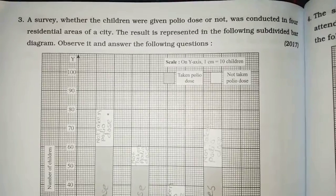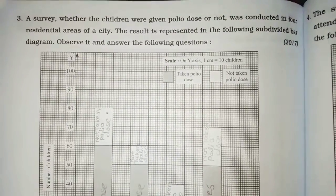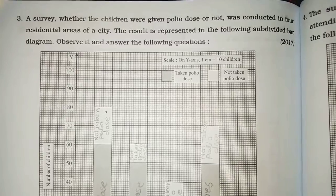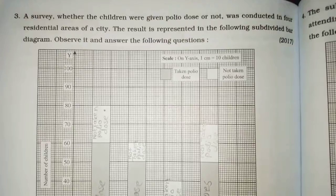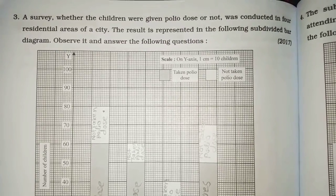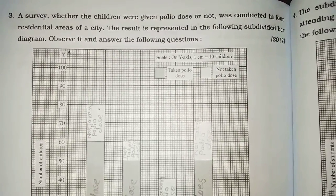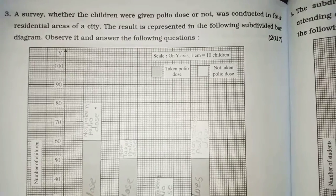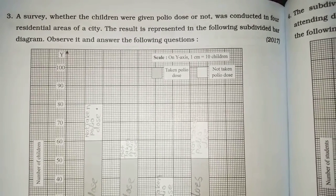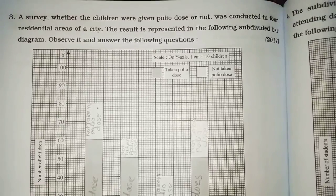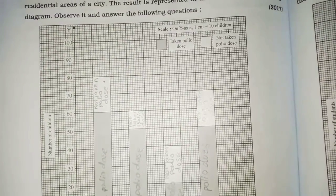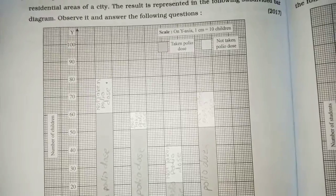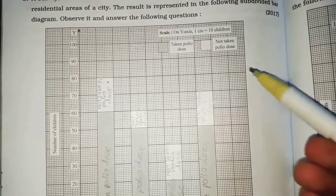Question three. A survey whether the children were given polio dose or not was conducted in four residential areas of a city, the result is represented in the following subdivided bar diagram, observe it and answer the following question. ह्या apply bar graph observer करायचे. Scale on y-axis one centimeter ten children.